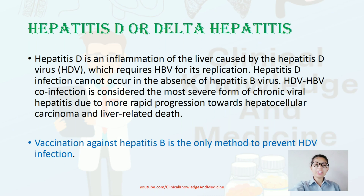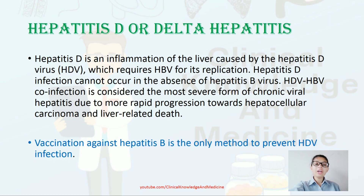Hepatitis D is an inflammation of the liver caused by the hepatitis D virus, which requires HBV for its replication. Hepatitis D infection cannot occur in the absence of hepatitis B virus. Co-infection is considered the most severe form of chronic viral hepatitis due to more rapid progression toward hepatocellular carcinoma and liver-related deaths. Vaccination against hepatitis B is the only method to prevent hepatitis D infection.